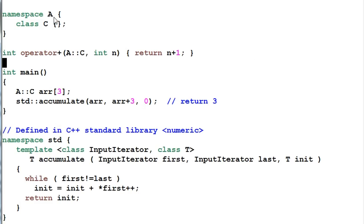We have a namespace A and inside A we have a class C. Then we define our operator plus that works on C. This operator really should belong to the interface of C, but it is not in the same namespace as C. In the main function, I create an array of C and then call the standard library function accumulate on the array.